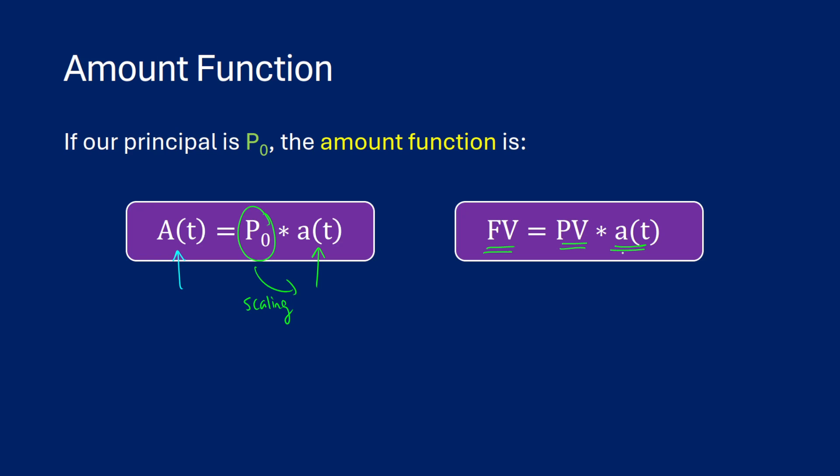Another way you can think about this is saying that the future value is equal to the present value times the accumulation function. It's just two ways of saying the same thing. I like to use the formulas a little bit more than using FV and PV, just because personally, I understand that a little bit better.